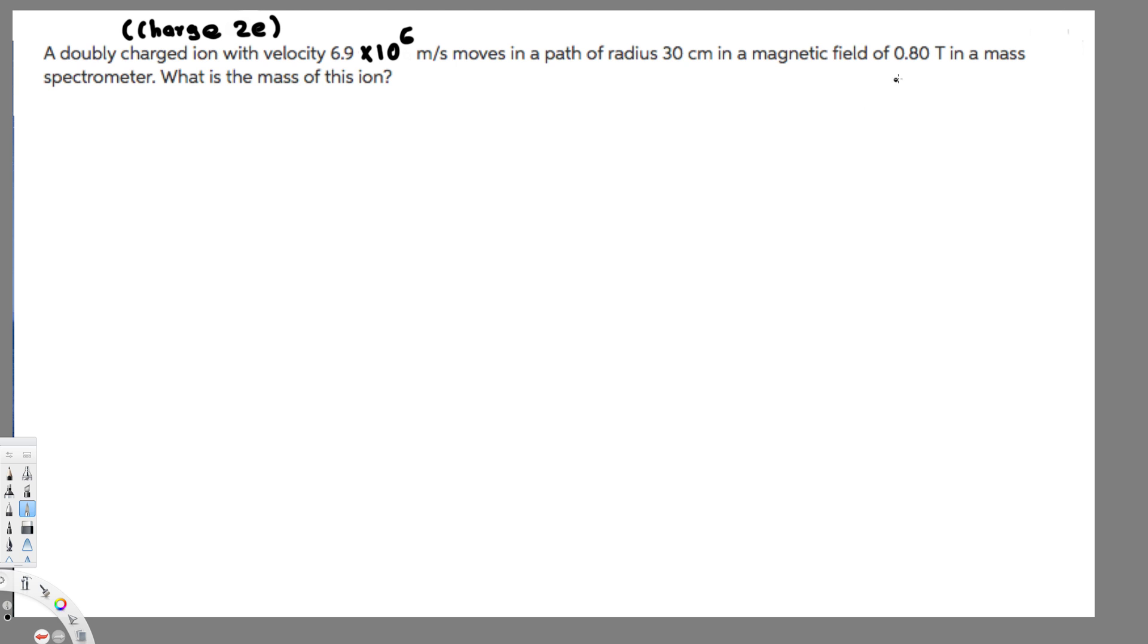in a magnetic field of 0.80 Tesla in a mass spectrometer. What is the mass of this ion? The charge is given by two electrons. Let's see how we can find it.